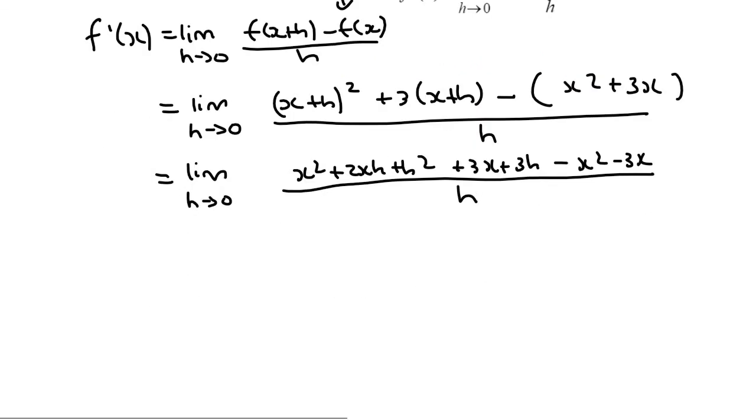Okay, now if you've done everything correctly, in this next step, everything that doesn't have an h should cancel. So let's see. This x squared would cancel with that minus x squared, and this 3x would cancel with that 3x. There we go. So everything that didn't have an h cancelled. That is a good thing. That's how it's supposed to happen every single time.